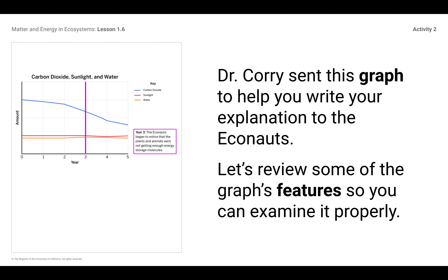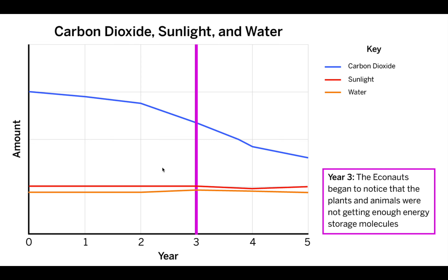This is the graph that Dr. Corey sent. I'm going to review some features of a graph: we've got the title, the X and Y axis titles, and here's our key. The title of this graph is Carbon Dioxide, Sunlight, and Water, and we're looking at the amount over a period of time in years. This line here shows year three — that's when the Econauts begin to notice that the plants and animals were not getting enough ESMs. You're going to look at the amount of carbon, the amount of sunlight in red, and the amount of water. Based on this graph, what claim can you support? I'm not going to tell you — I'm hoping it's pretty obvious to you.